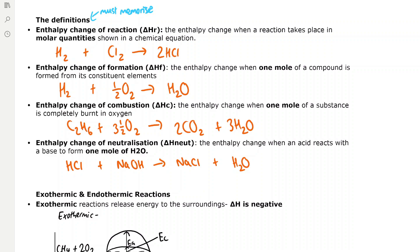Enthalpy change of combustion is the enthalpy change when 1 mole of a substance is completely burnt in oxygen. For example, ethane reacts with 3.5 moles of oxygen in combustion to form 2 moles of CO₂ and 3 moles of H₂O — that is complete combustion because only carbon dioxide and water are formed. Enthalpy change of neutralisation is the enthalpy change when an acid reacts with a base to form 1 mole of H₂O. For example, hydrochloric acid reacts with sodium hydroxide to form sodium chloride and water, and it has to be 1 mole of water formed.